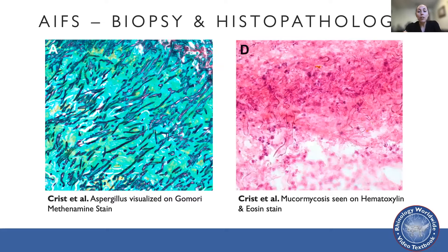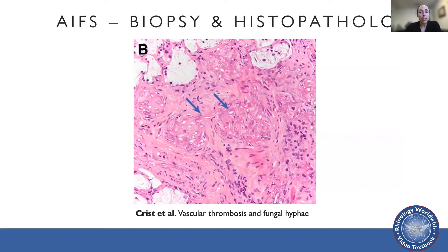Here are two permanent stains as described by Christ et al. The left biopsy specimen demonstrates thin acute branching patterns seen on GMS stain, which can eliminate false negatives when large areas of necrosis are present—this also represents an Aspergillus staining pattern. On the right, a biopsy demonstrates the broad-based aseptate characteristic of mucormycosis, which may be folded onto themselves during processing. This H&E stain demonstrates thrombosis of a vascular structure secondary to fungal invasion by the fungal hyphae.